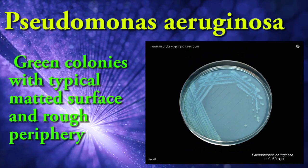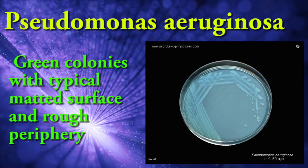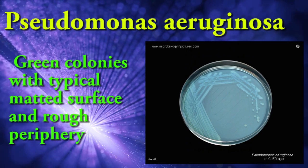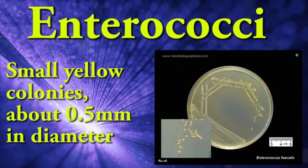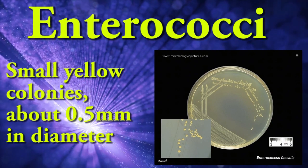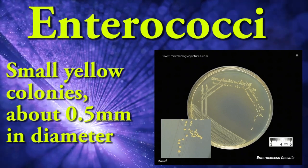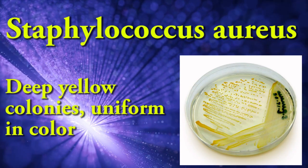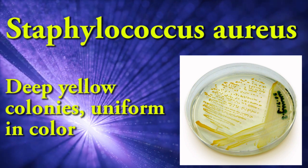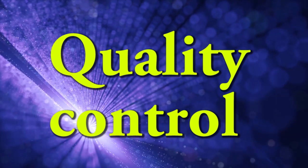Pseudomonas aeruginosa produces green colonies with a typical matted surface and rough periphery. Enterococci produce small yellow colonies about 0.5 millimeters in diameter. Staphylococcus aureus produces deep yellow colonies, uniform in color.